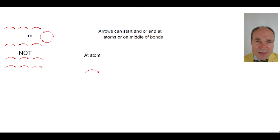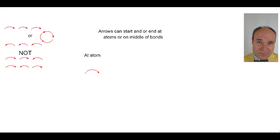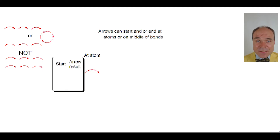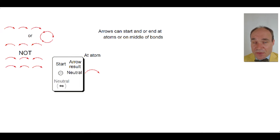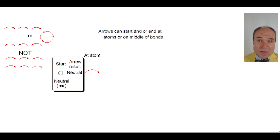First, we'll think about where the arrow begins or ends at an atom. Where the arrow begins at an atom and that atom starts out as negative, the consequence of the arrow movement will make it neutral. Where an atom starts out neutral, the consequence of that arrow movement will make it positive.